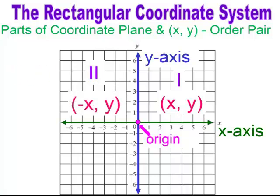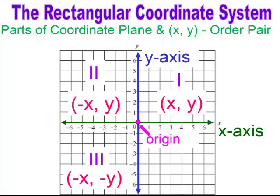The second quadrant — going counterclockwise — is going to have a negative X-value. Look at the X-axis: my X-values are negative, and the Y-values are positive, going up. In the third quadrant, both my X-values and Y-values are negative. And then, lastly, the fourth quadrant: my X-values are positive, and my Y-values are negative.